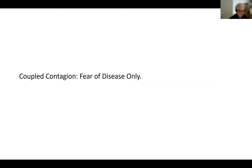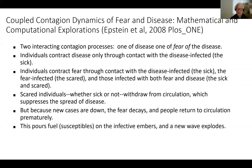Here are a couple of simple approaches, all extensible. The first I want to talk about is coupled contagion, which involves contagious disease and contagious fear of the disease — nothing about vaccine or vaccine fear. We published this in 2008: 'Coupled Contagion Dynamics of Fear and Disease: Mathematical and Computational Explorations.' The idea is there are two interacting contagion processes — one of disease, one of fear of the disease. Individuals contract disease only through contact with sick people. Individuals contract fear through contact with the disease-infected, the fear-infected, and those infected with both fear and disease.